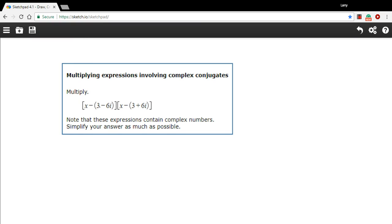In this problem, we're being asked to multiply these two things together, and what we have here are what's called complex conjugates. So you'll notice this 3 minus 6i, that's a complex number because it's got a real part, an imaginary part, put together.